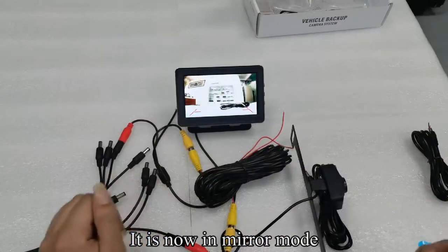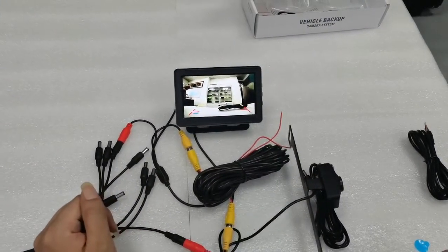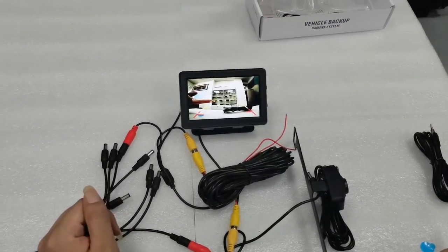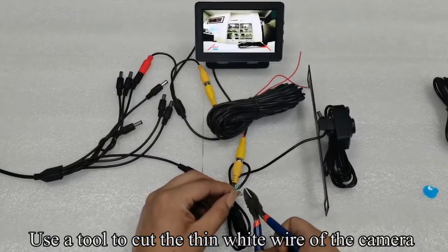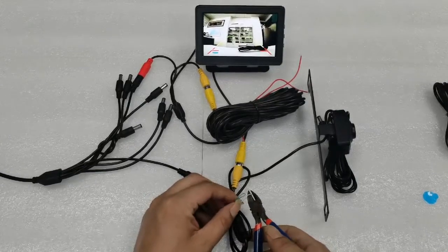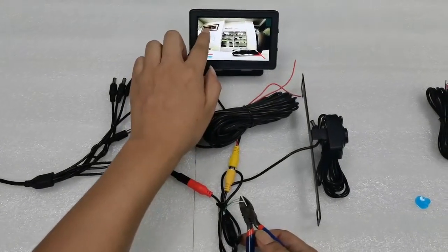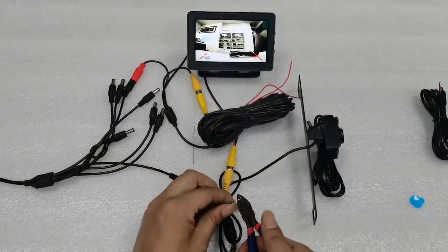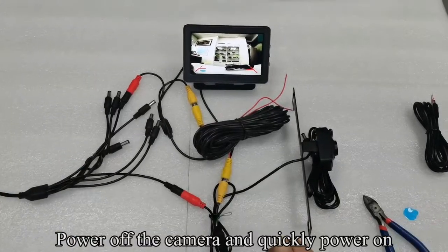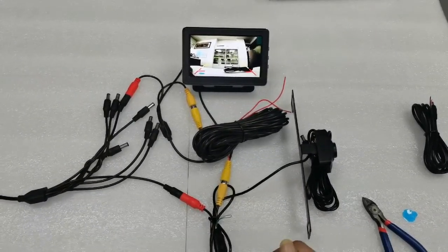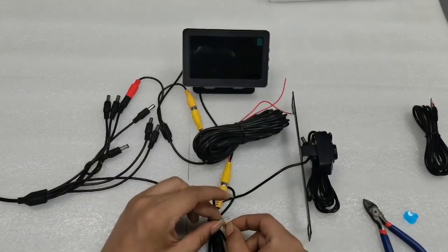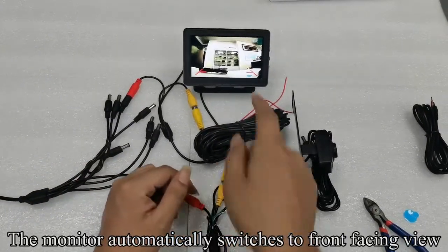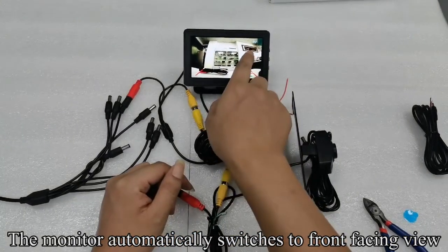It is now in mirror mode. Use a tool to cut the thin white wire of the camera. Power off the camera and quickly power on. The monitor automatically switches to front-facing view.